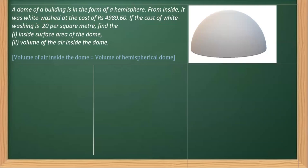Now what we have to find in the first part is the inside surface area of the dome, that is the curved surface area. Then we also have to find the volume of air inside. For getting the volume of air, the volume of air inside is the same as the volume of the hemisphere.